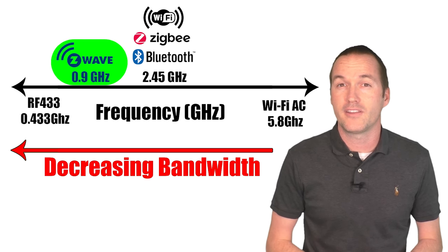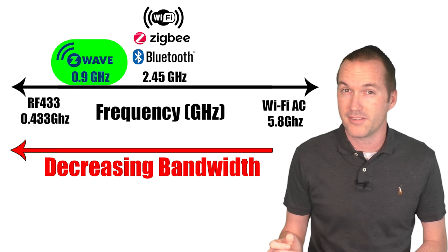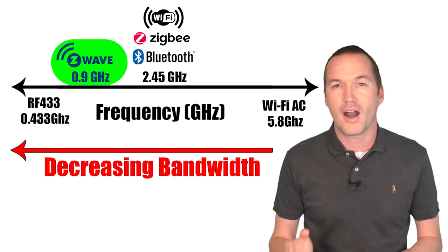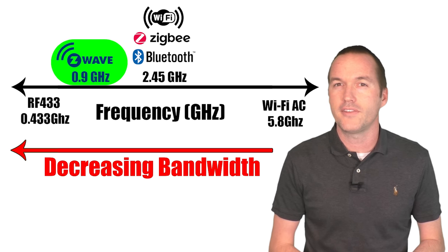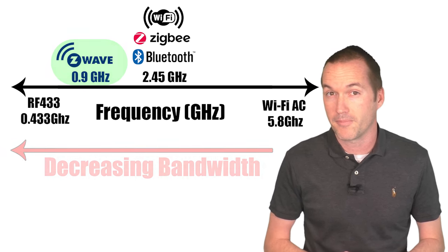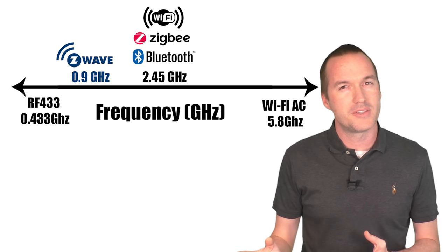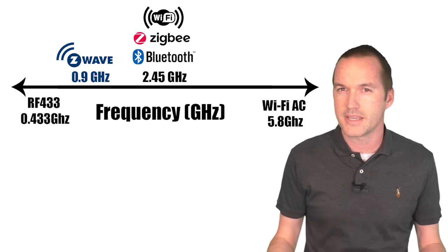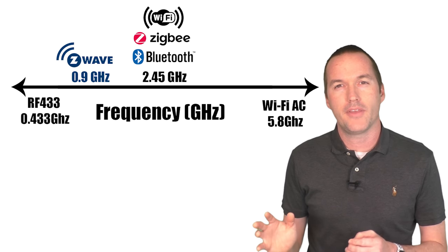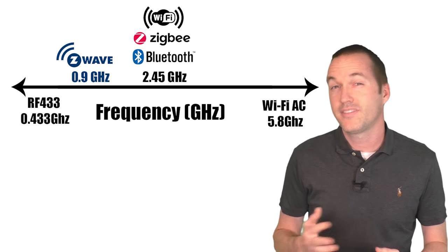Currently the slower data transmission isn't a huge deal because messages sent by these devices are relatively small. But as these technologies make it into more high-resolution sensors, we may reach the limit of what Z-Wave frequency is capable of transmitting. The last thing to discuss in this science section is frequency congestion, sometimes referred to as interference.